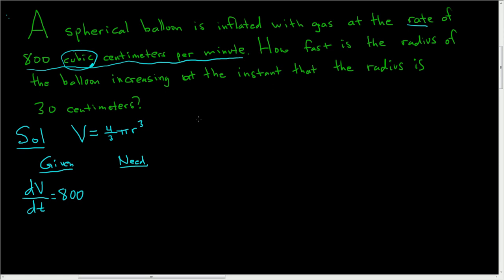What do we need? The question says how fast is the radius of the balloon increasing? So we need dr/dt at the instant that the radius is 30 centimeters, so when r is equal to 30.